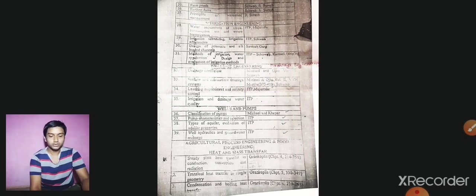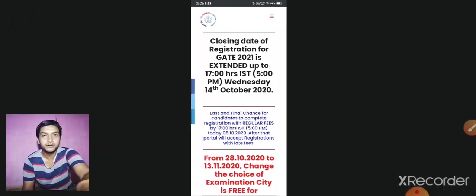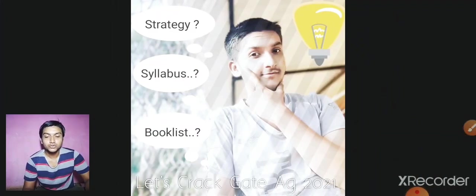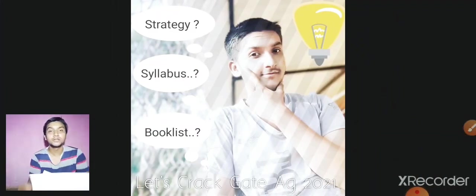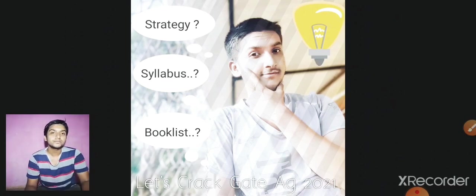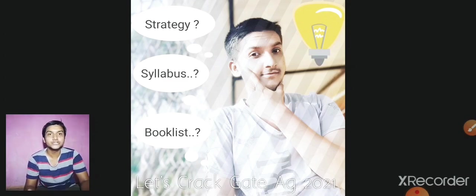Now we will talk about the paper pattern. Most of the people do not know about the paper pattern. The GATE in agricultural engineering consists of 65 questions which are of 100 marks. The 10 questions are of general aptitude which are of 15 marks, and the remaining 55 questions are from the core subject, that is agricultural engineering. In 55 questions, they are divided in two sections.